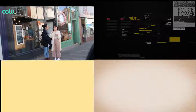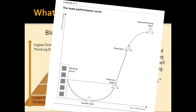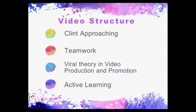This semester, the assessment of our viral video module is producing two videos in groups for our clients, Colu and Scotty Press. In this video, I will self-reflectively discuss my two group videos combined with the following series: Bloom's Taxonomy, Kasenberg and Smith's team performance curve, Tuckman's linear model of team development, Berger's Steps Framework, and Nehen and Hemsley's viral life cycle. The video is divided into four sections: client approaching, team work, viral theory in video production and promotion, and active learning.